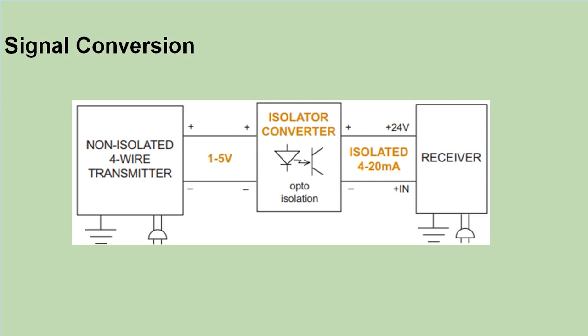In addition to signal isolation, the isolator also has signal conversion features. Here we see a non-isolated four-wire or two-wire transmitter giving a 1-5 volt signal. But the most commonly accepted and used signal is 4-20 milliampere because it has advantages. For this purpose, the signal isolator, in addition to signal isolation, also converts the signal. In this example, 1-5 volt signal is converted to 4-20 milliampere.